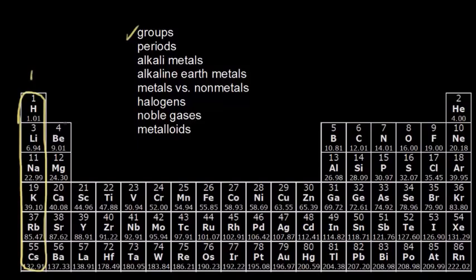So all of these elements are in the same group, and we call this group one. I can see that all of these elements are also in the same column. So all these elements are in the same group, and we call this group two.